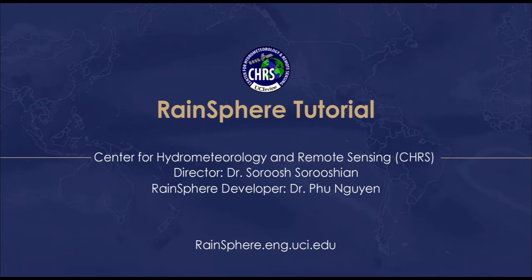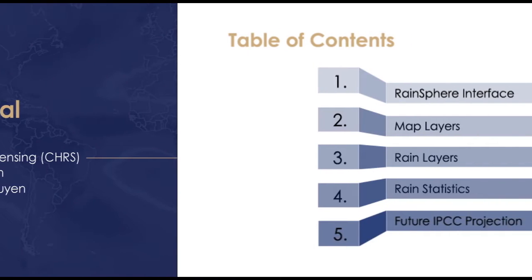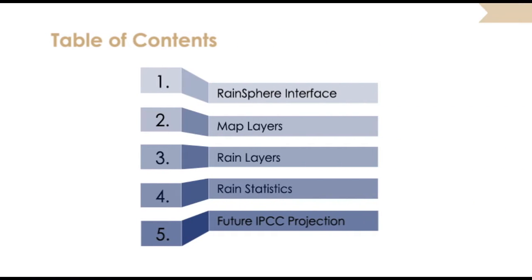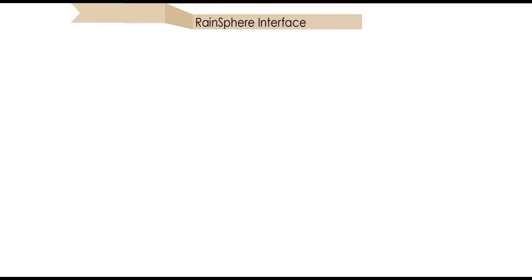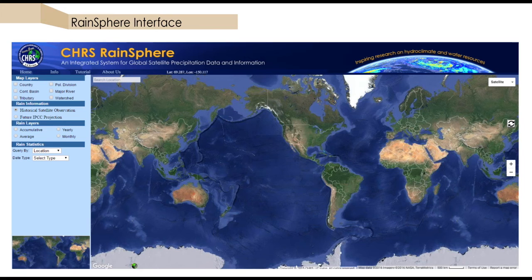Second, for those interested in model projections, is the presentation of IPCC CMIP-5 future precipitation projections. This tutorial covers various features of the system, beginning with an overview of the RainSphere interface.